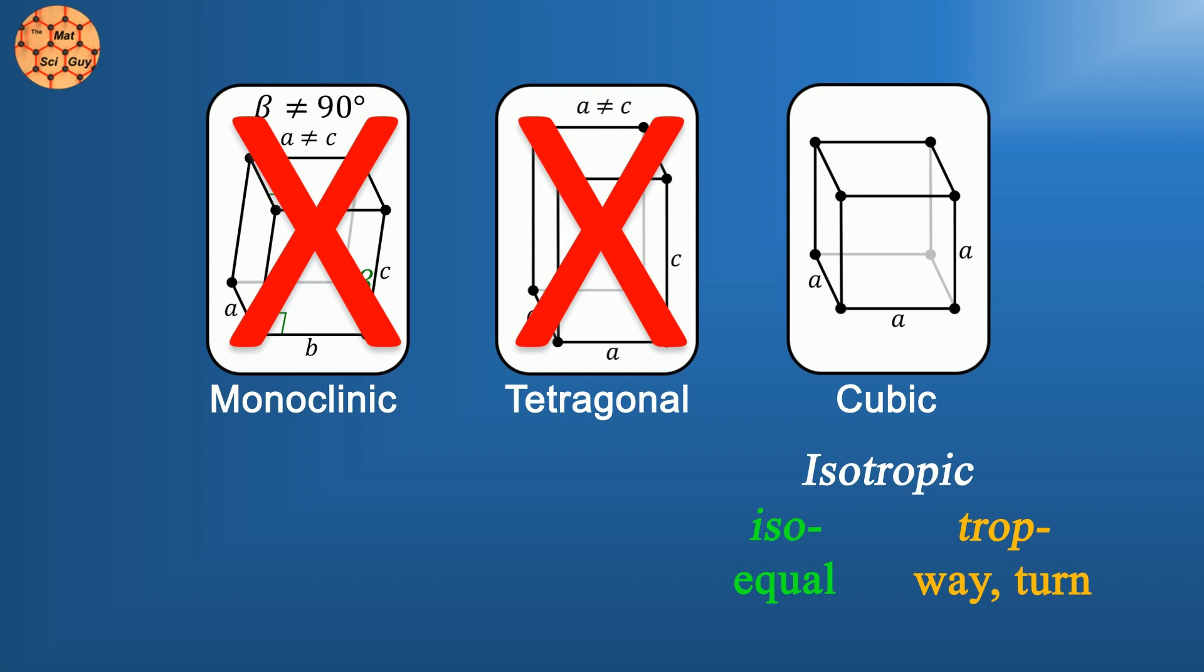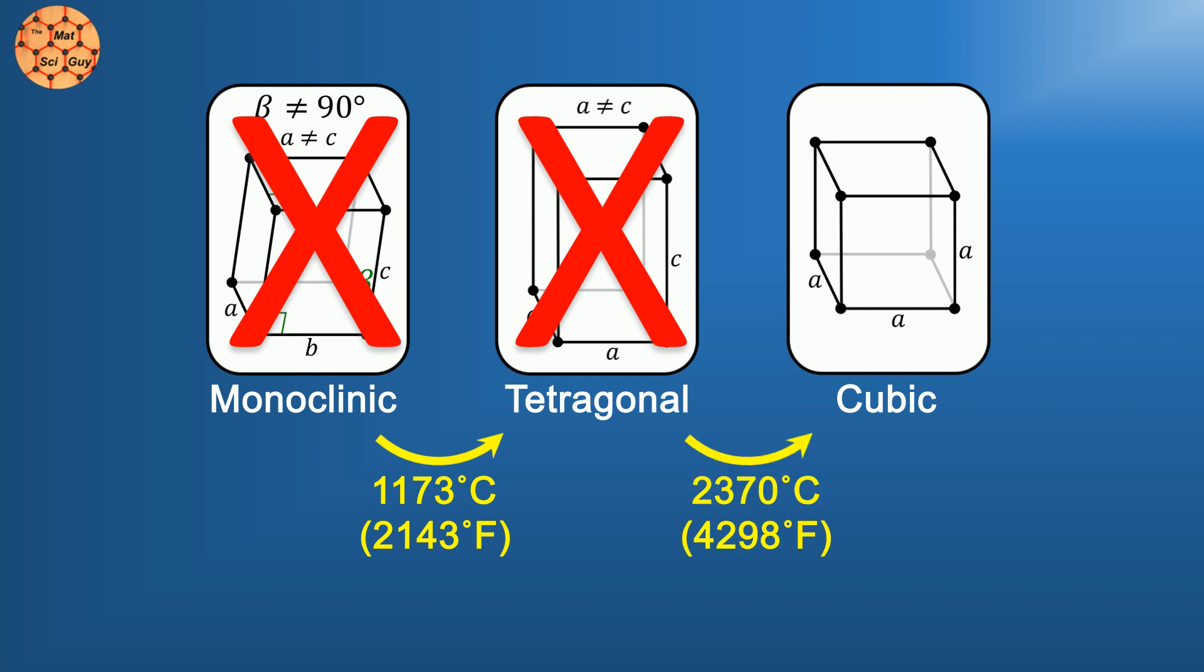The problem is, the cubic phase is only stable at extremely high temperatures, with the final phase transition occurring at over 2,000 Celsius.